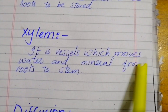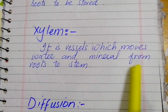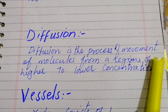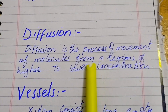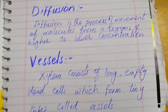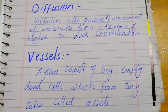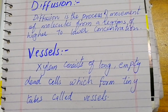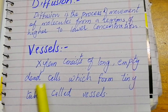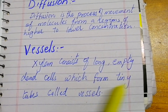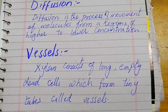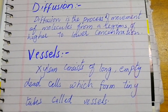Here are some definitions. Phloem: a group of cells that carries the food made in the leaves down to the root to be stored. Xylem: a vessel which moves water and minerals from root to stem. Diffusion: the process of movement of molecules from a region of higher to lower concentration. Xylem consists of long, empty, dead cells which form tiny tubes called vessels. You can download these definitions.